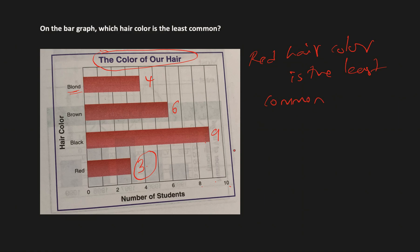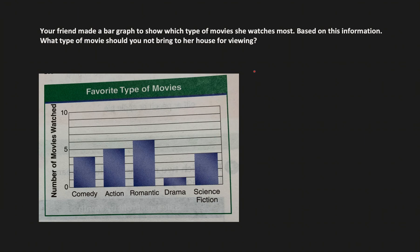The interpretation, regardless of whether the bar is vertical or horizontal, remains kind of similar. Let's look at our last example where this graph is for the favorite type of movies. We can see that the different types of movies are on the x-axis and the number of movies watched are on the y-axis. We can see that the person saw four movies of comedy type, five action movies, six romantic movies, one drama movie, and then four science fiction movies.